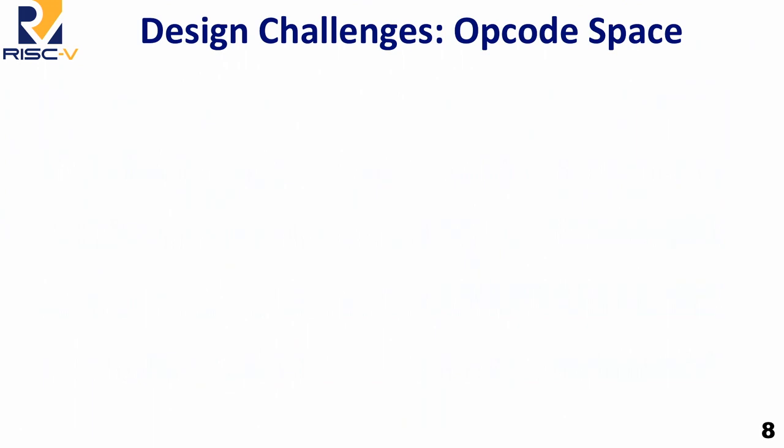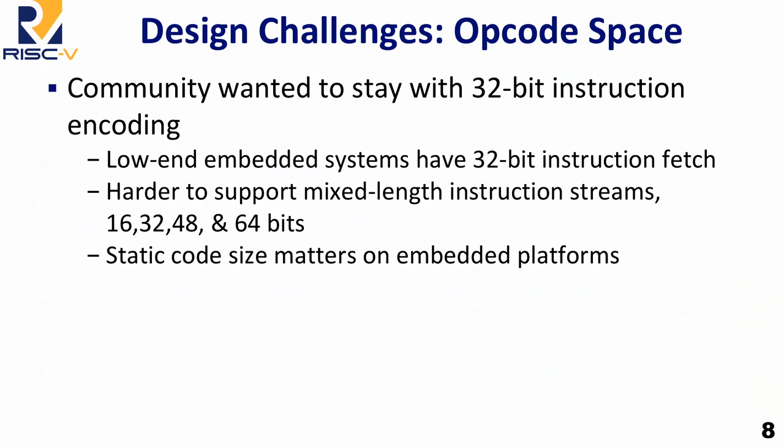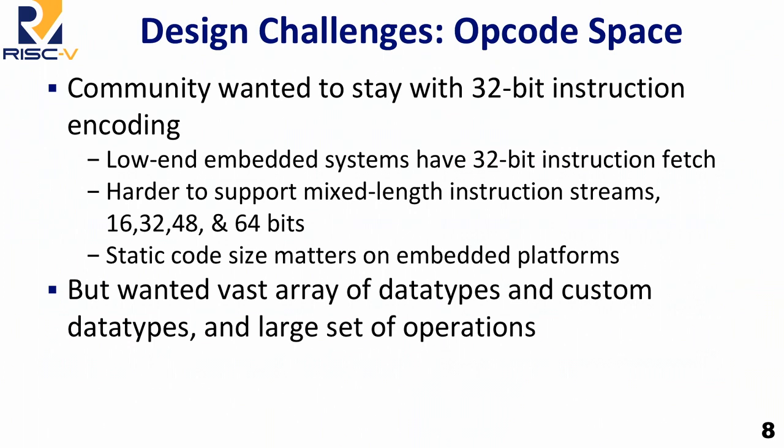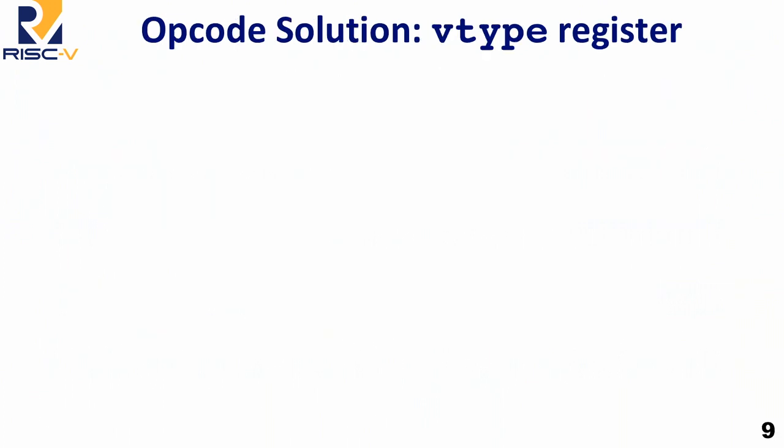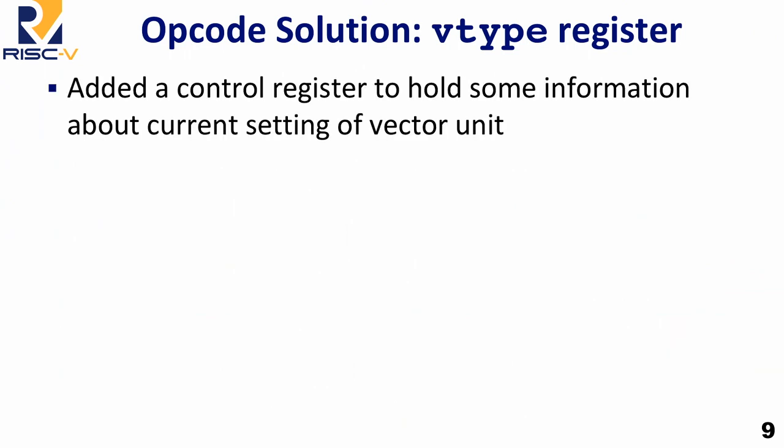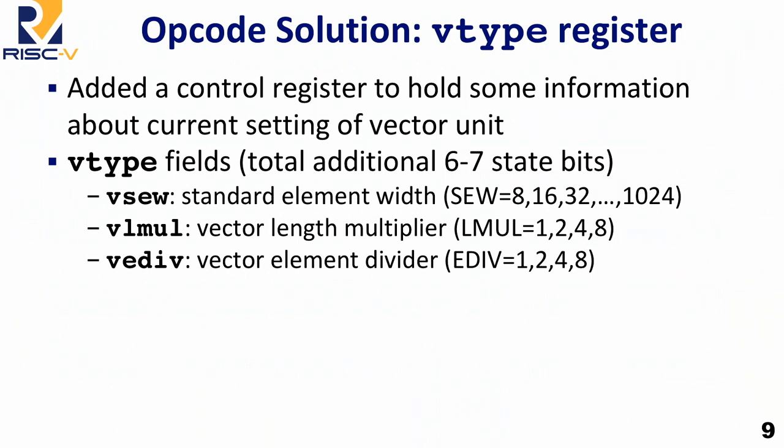One of the big design challenges is opcode space. This community doesn't really understand Shannon theory — we're not building this with qubits, we're using regular binary bits. So everything has to fit in 32 bits, but there are too many operations. The design goal of fitting within 32-bit encoding was driven by low-end systems that usually only have a 32-bit instruction fetch. People didn't want mixed-length instruction streams, and static code size also matters on embedded platforms. But the set of data types people wanted to support kept growing.